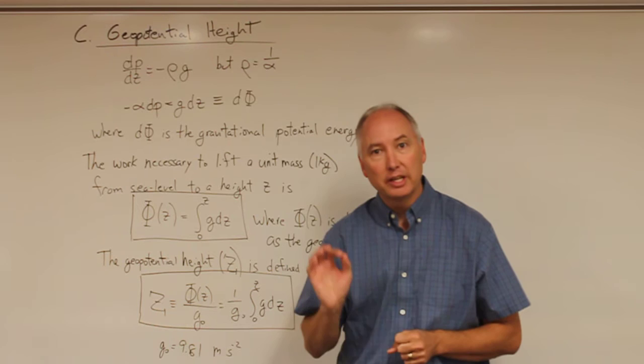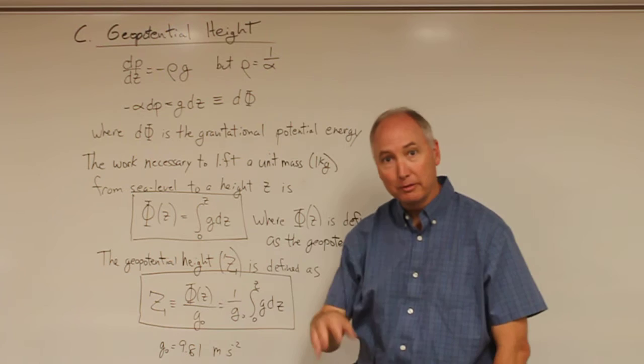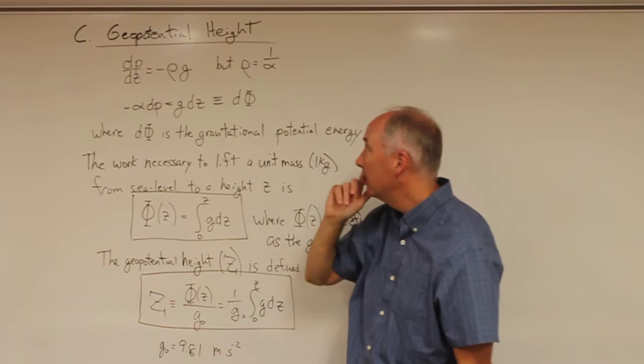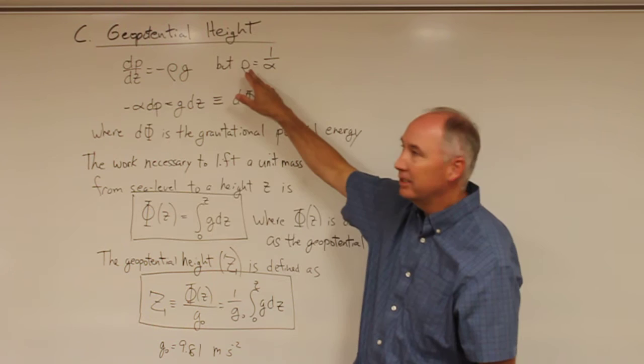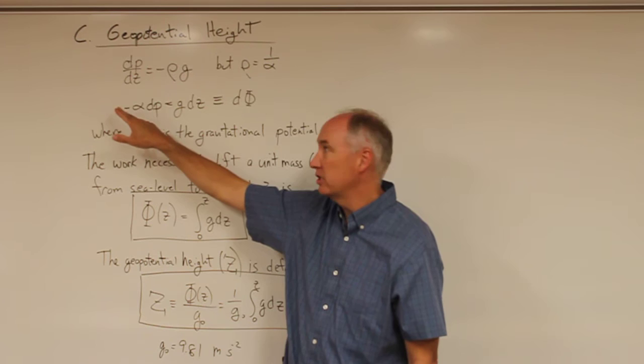We'll begin with the hydrostatic equation, which if you remember from the last lecture is dP/dz = -ρg. We'll fold something in from the first lecture where we defined the density as one over the specific volume. If we put this into the equation, we have -α dP = g dz, where α is the specific volume.